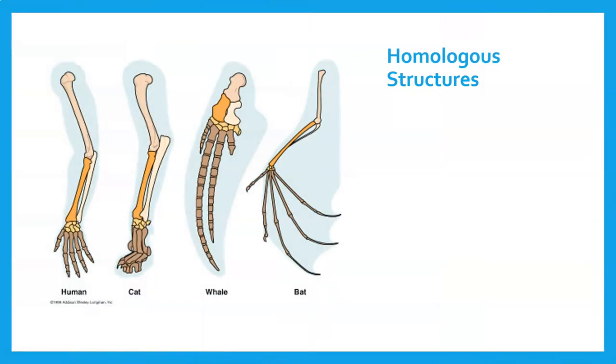Starting off, having a look at our homologous structures. You'll see here we've got four different limbs of some animals. Homologous structures occur in species that are somehow related in their evolution and their ancestry. The characteristics and structures have the same basic structure.